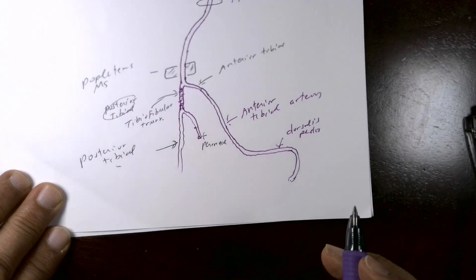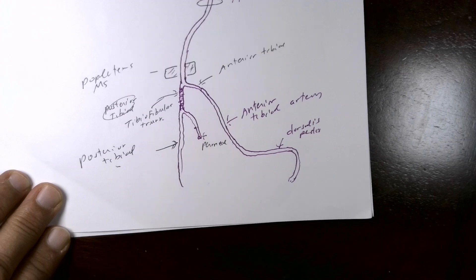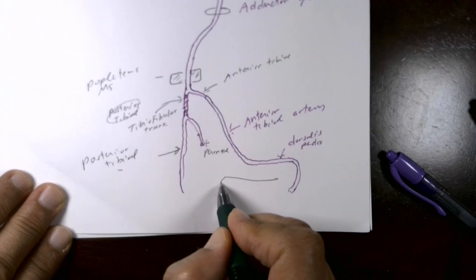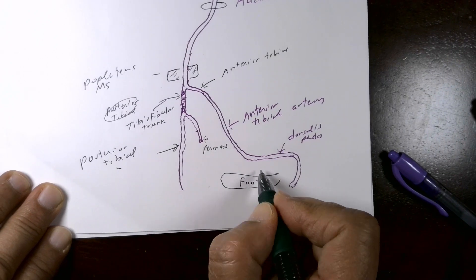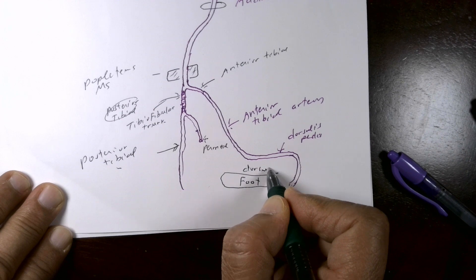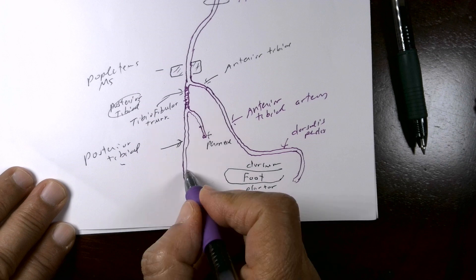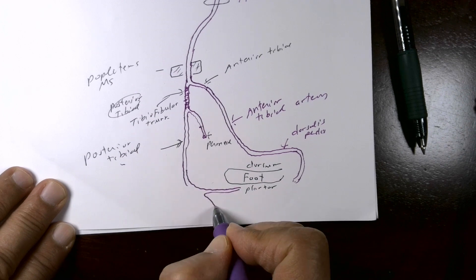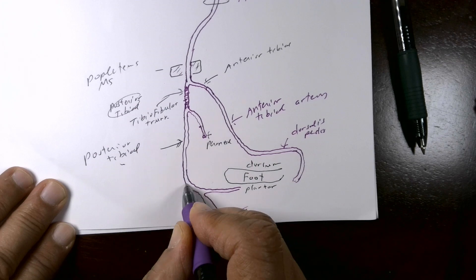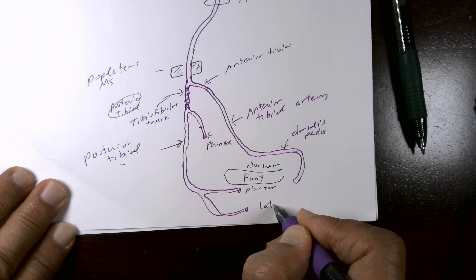The posterior tibial artery continues to the sole of the foot. Looking at the foot, with dorsal and plantar surfaces, the posterior tibial artery splits into the lateral and medial plantar arteries.